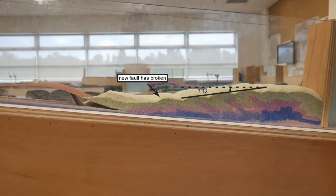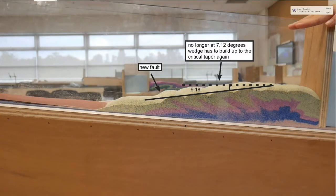Once reached, a new fault breaks so sediments getting pulled in can continue building the wedge. The wedge is no longer at the critical angle, and thus has to build up to 7.12 degrees again.